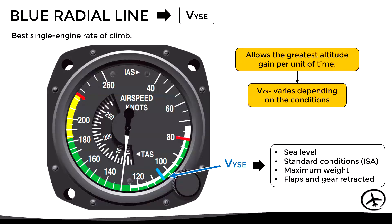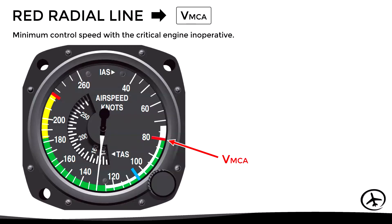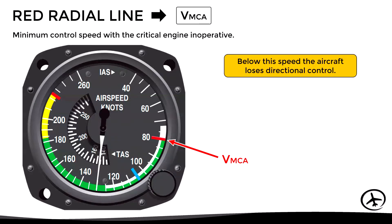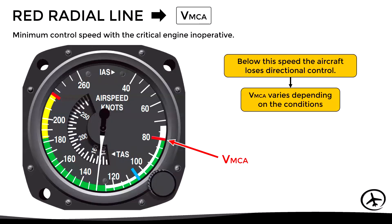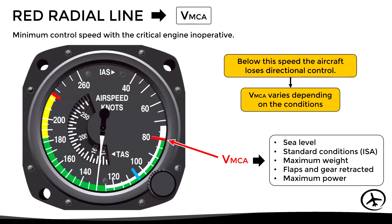The other additional marking in twin engine aircraft is the red radial line representing VMCA — the minimum control speed. This is the lowest speed at which the aircraft can maintain directional control when the critical engine is inoperative. VMCA also does not have a fixed value; the red line corresponds to the actual VMCA only under the following conditions: sea level standard conditions, maximum certified weight, flaps and gear fully retracted, and maximum power on the operative engine. If any of these conditions change, the VMCA will also change.